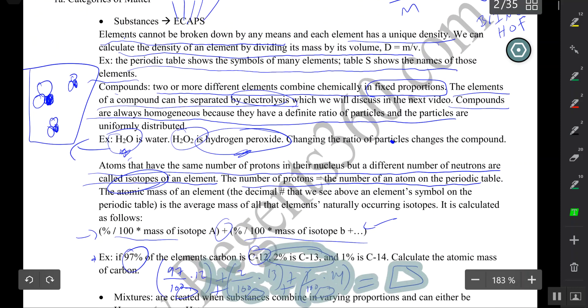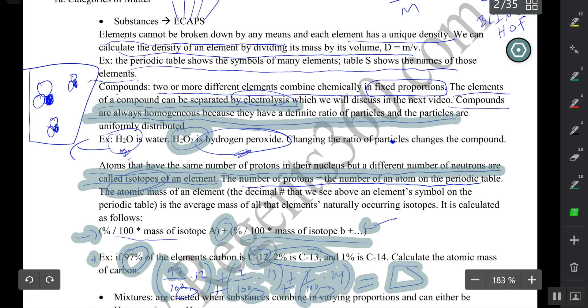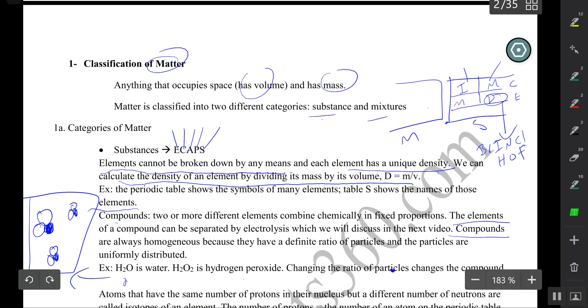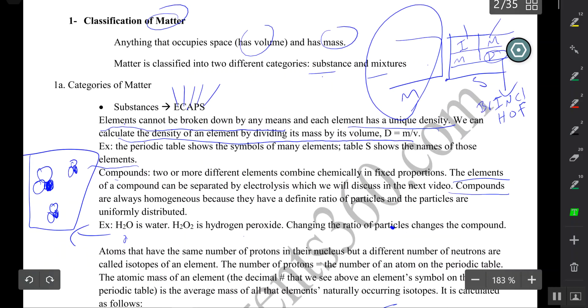We talked about substances, we talked about that first cabinet which contains the elements and the compounds, the monatomic and diatomic elements, the ionic and molecular compounds. Now we're going to talk about the second cabinet, the mixtures cabinet. In the mixtures cabinet there are only two shelves: the homogeneous mixtures and the heterogeneous mixtures.